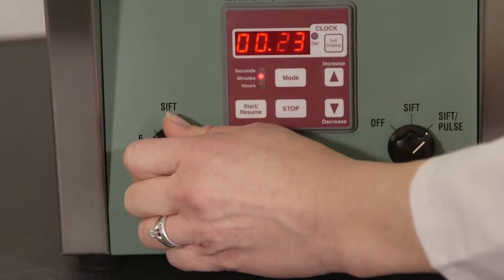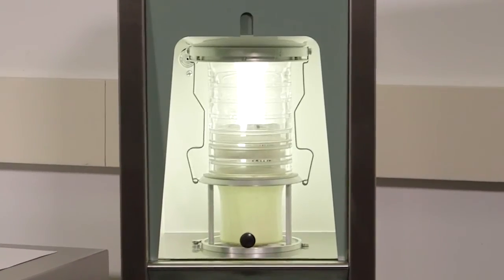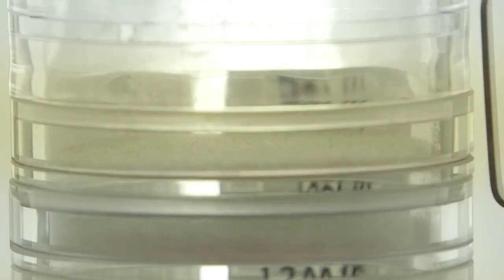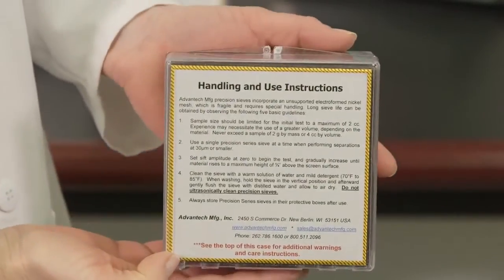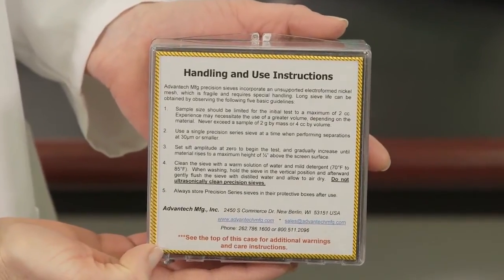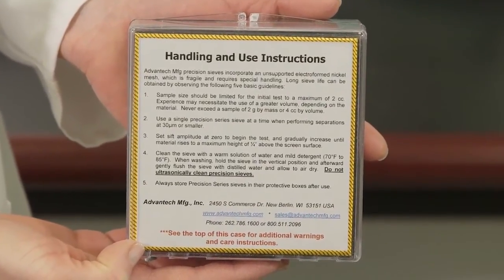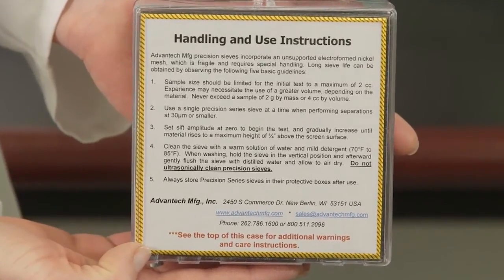Slowly increase the amplitude while observing your sample through the transparent sieve frames. The optimum amplitude has been reached when the largest particles are rolling on the sieve surface and no particles are arcing higher than half the height of the sieve frame. Beware as settings for precision line sieves differ. Refer to the instructions on the jewel case of your precision sieve before proceeding with your test.